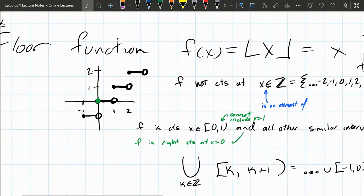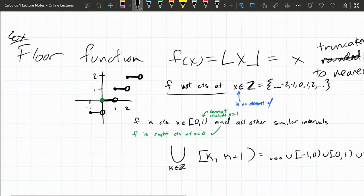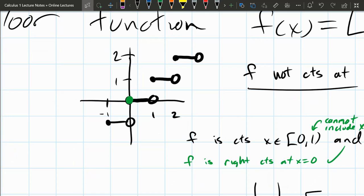All right, this function. So where is this function not continuous? Let's think about the function. It should be pretty obvious where it's making jumps. It's not continuous at all of the whole numbers. Negative 1, 0, 1, and 2. It's making these jumps. So it's not continuous at all the whole numbers.